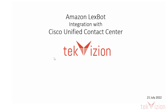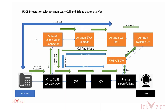Before going on to the demonstration, let's quickly look at the call flow. The PSTN caller calls into the contact center, where at the CUBE the call gets forwarded to the Amazon Voice Connector, and finally the LexBot is in conversation with the PSTN caller.